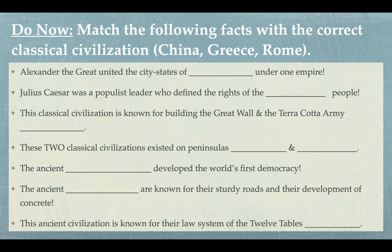For example, the first sentence says: Alexander the Great united the city-states of blank under one empire. Was Alexander the Great a leader of China, was he a leader of Greece, or was he a leader of Rome? Once you have an answer, just fill in the blank. When you post the response to the do now in Google Classroom, you could say number one is Greece, number two is Greece, number three is Rome, number four is China — whatever. That is probably the easiest way to accomplish this do now.